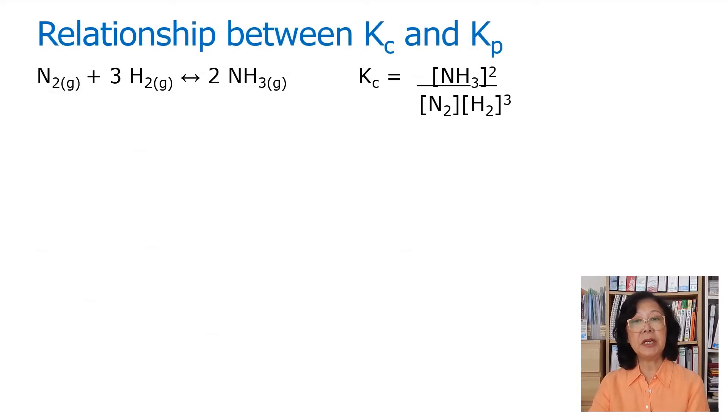The relationship between Kc and Kp. Going back to the Haber process, we write Kc expression. In the ideal gas law, PV is equal to nRT. So we can rearrange the terms to write concentration of something as mole per volume, n over V, or we can say it's pressure over RT.